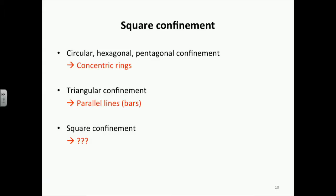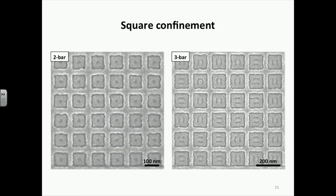Next, we wanted to check what would happen with square confinement, where the bending angle is 90 degrees — between triangular and pentagonal confinement. For square confinement, we observed bar-shaped structures similar to triangular confinement. However, unlike triangular confinement, the bar-shaped structures were well-ordered and well-aligned, either in the horizontal or vertical direction.